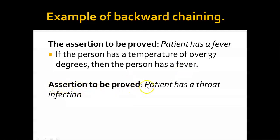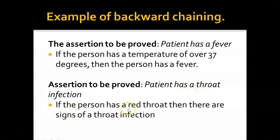Another example: the assertion to be proved is that the patient has a throat infection. The system asks questions about a throat infection — such as whether they have a red throat — and if they affirm it, it confirms signs of a throat infection. In backward chaining, you state what problem you have and the system asks questions about that specific problem to prove that yes, that is what you have.